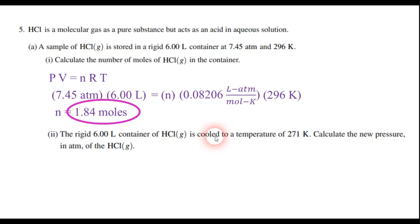Now part two tells us that we're going to take this container of gas and cool it down to 271 kelvins. What's the new pressure? So what's changing in this problem? Well, temperature is changing, and the pressure is changing. So P and T, that sounds like a Gay-Lussac's law. So P1 over T1 equals P2 over T2.